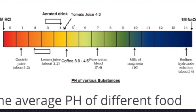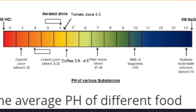The pH range is 0 to 14. A pH of 0 represents a highly acidic solution with the highest H+ ion concentration. A pH of 14 represents a highly basic solution with the highest OH- ion concentration. A pH of 7 is considered neutral — neither acidic nor basic.